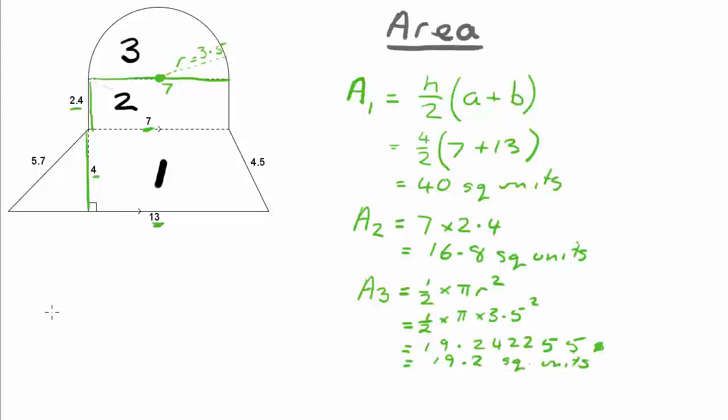That gives us the total area because what we need to do now is add the forty, the sixteen point eight, and the nineteen point two together. So our total area is going to be forty plus sixteen point eight plus nineteen point two, which gives us a total area of seventy six square units.